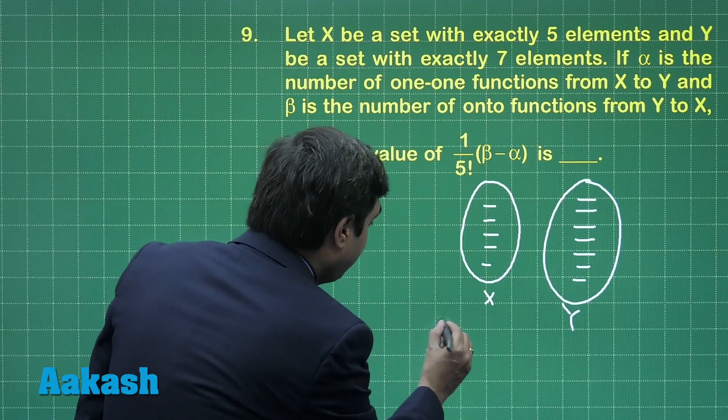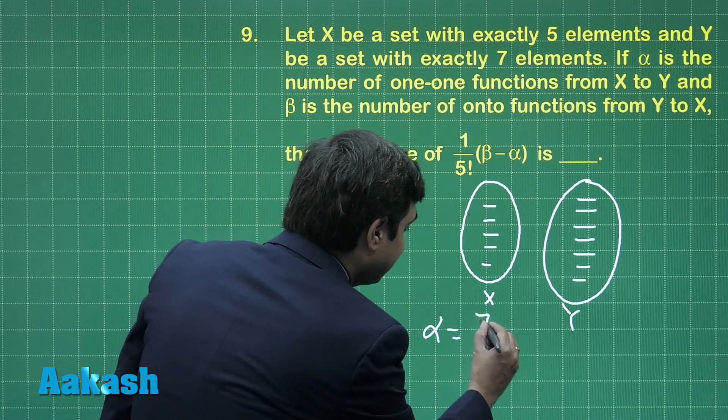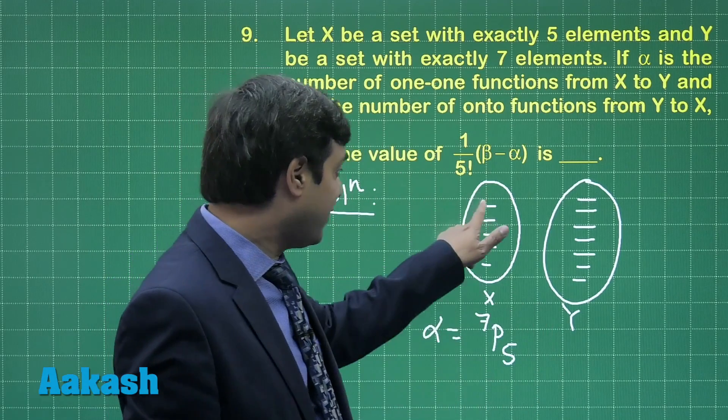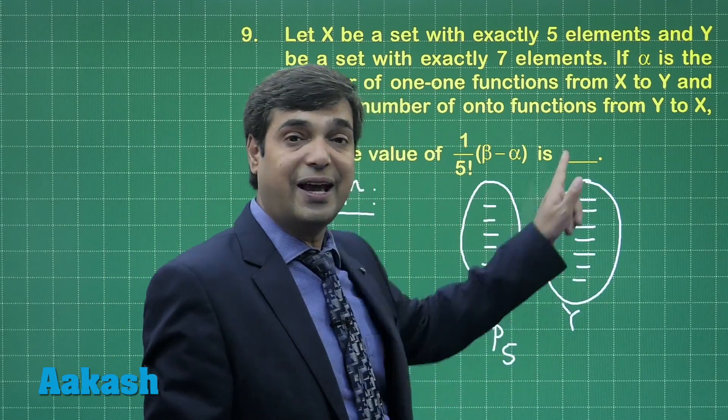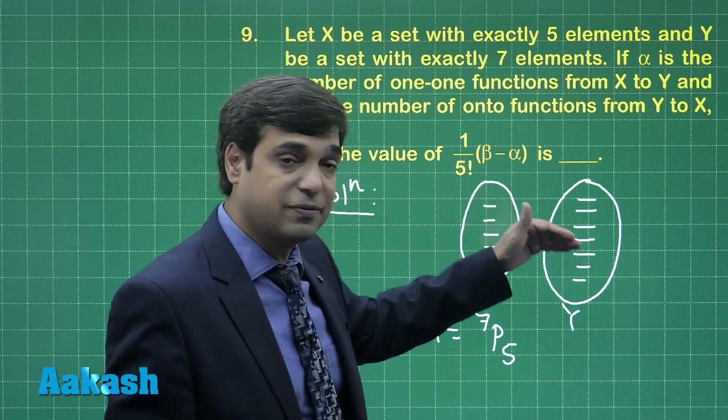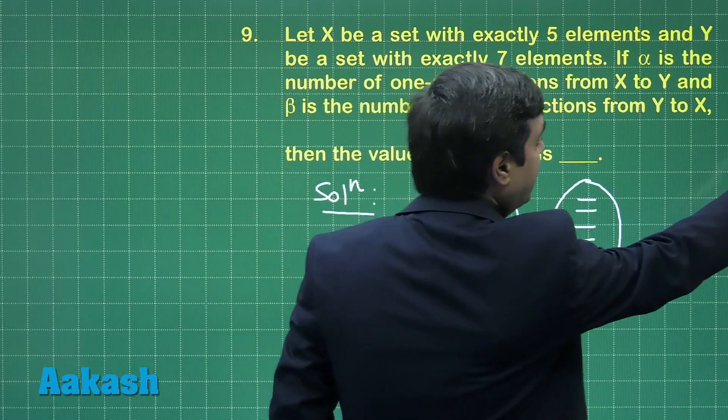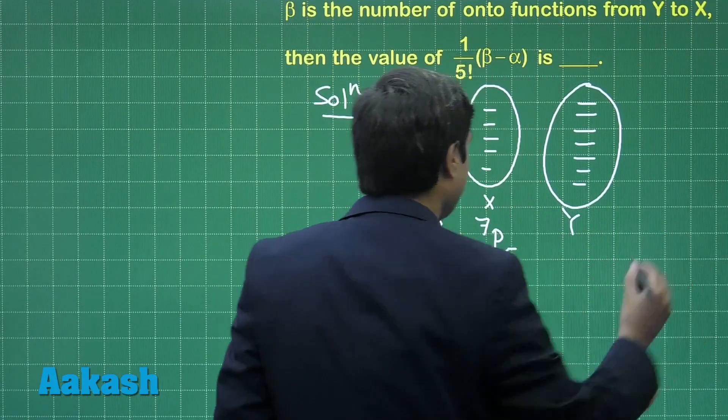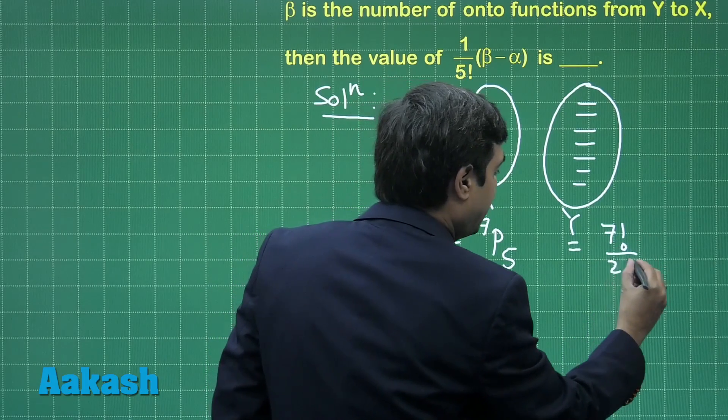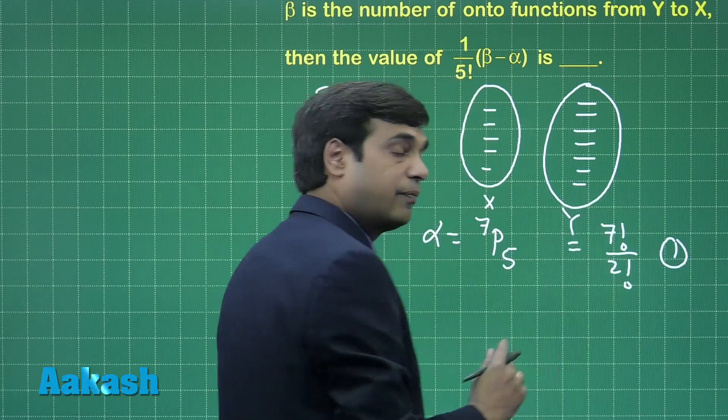For one-one, we have alpha equals 7P5 because first element has 7 choices, second has 6 choices, third has 5 choices and so on. So it is 7 factorial divided by 2 factorial.